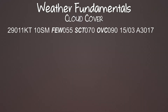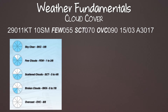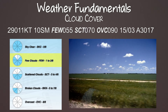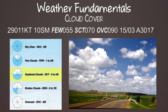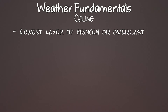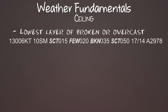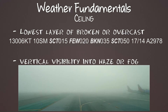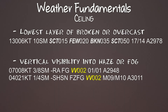On METARs you'll see scattered, few, or overcast clouds. If you divide the sky above you into eight equal sections: one to two sections covered is called few; three to four eighths is scattered; broken is five to seven eighths; and overcast means the entire sky is covered. A ceiling is the lowest layer of broken or overcast clouds. A ceiling can also be vertical visibility up into fog or haze — how far up you can see is considered a ceiling. On the METAR you'll see that as VV, or vertical visibility of however many feet.